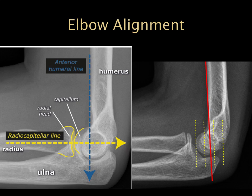Next we're going to move down to the elbow. One of our most important things to always be thinking about is elbow alignment in terms of the radial capitellar line — the radial head should always be articulating with the capitellum no matter what position the elbow is in: flexion, extension, rotation, whatever's going on. And the anterior humeral line, drawn along the anterior cortex of the humerus, should intersect with the middle third of the capitellum as we can see on the image.